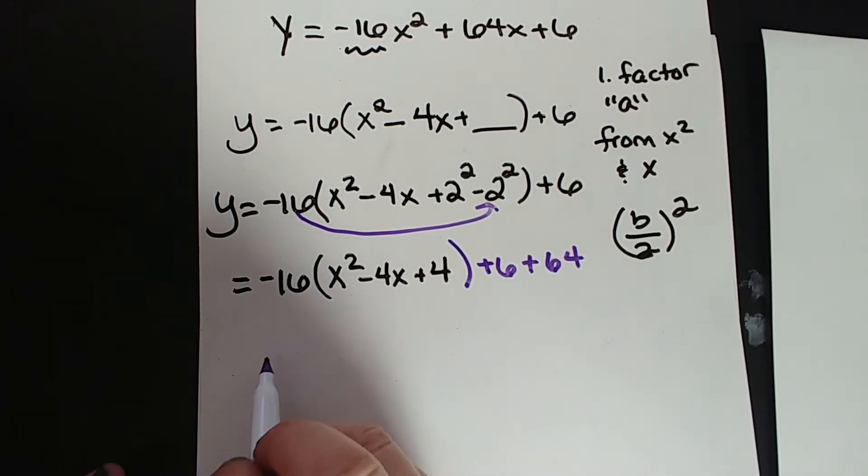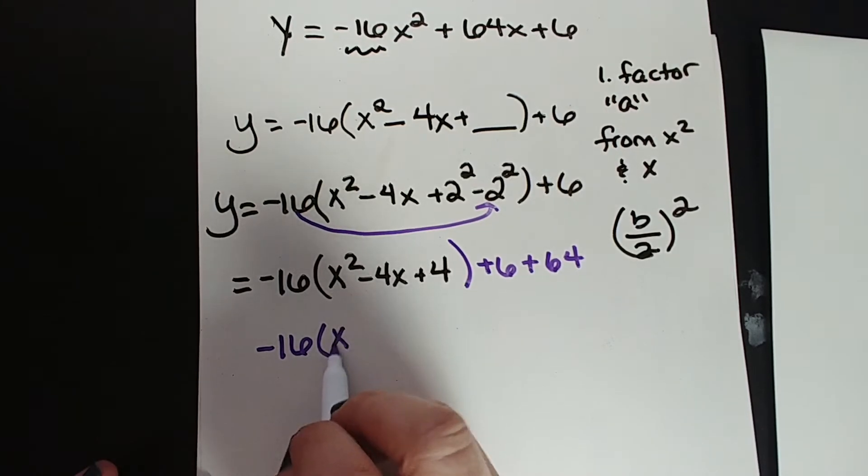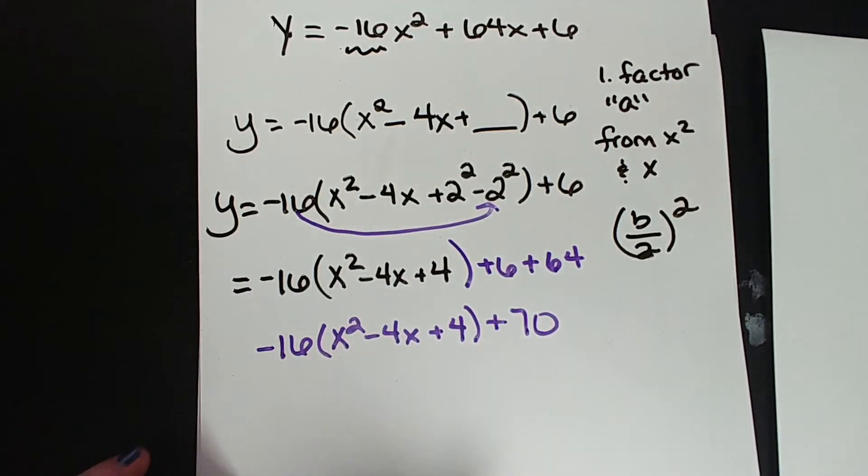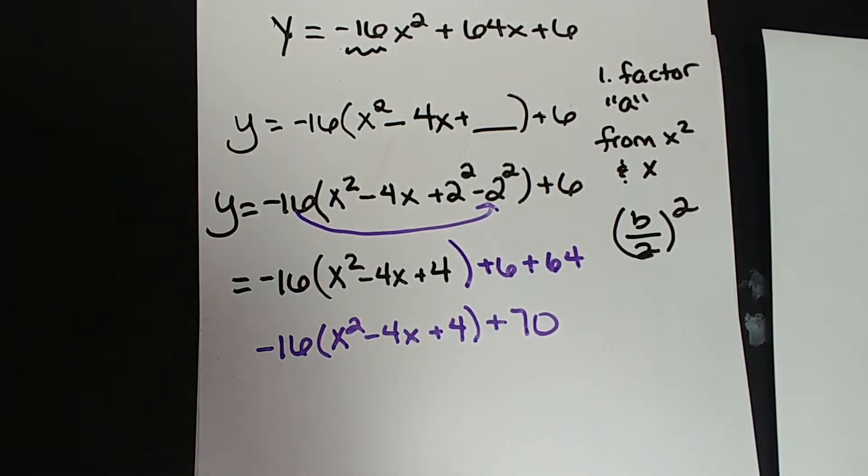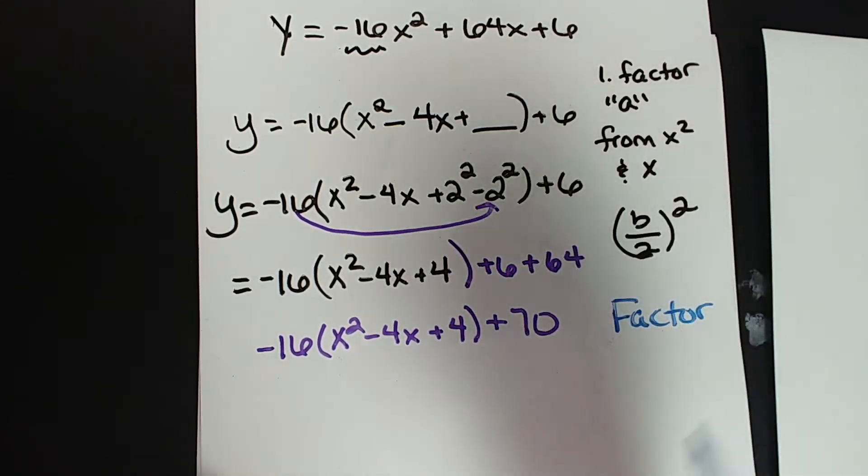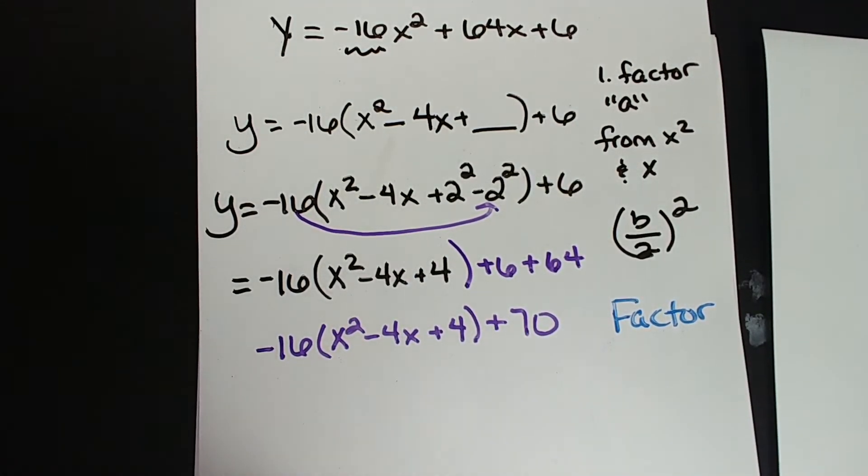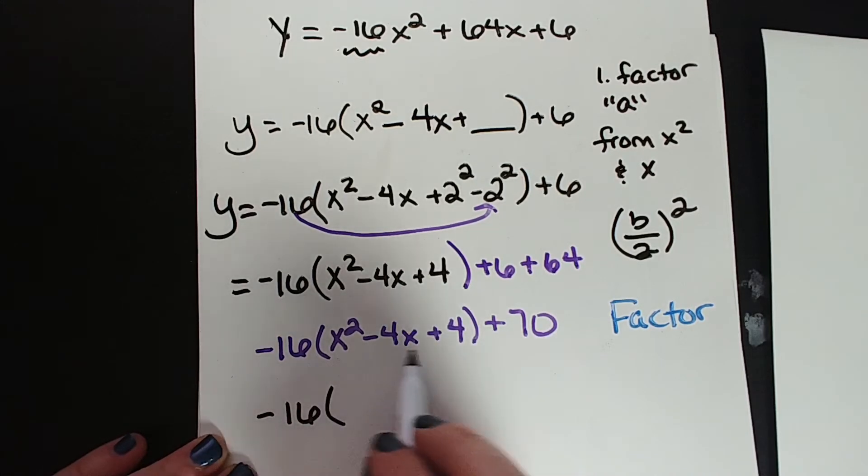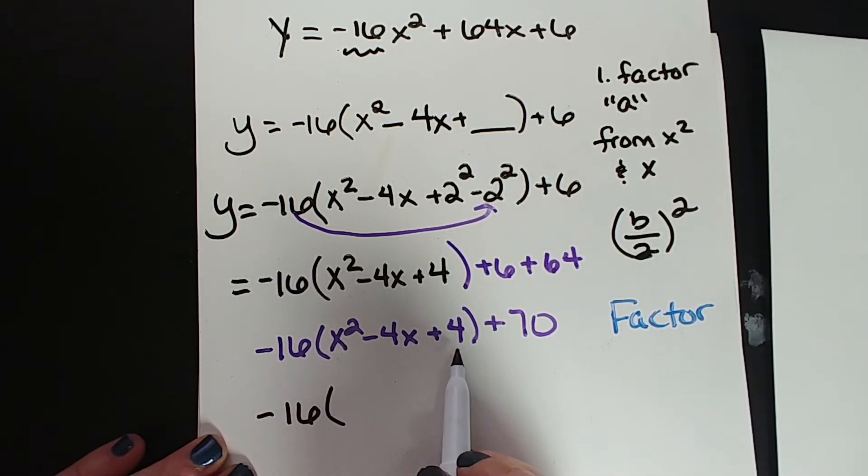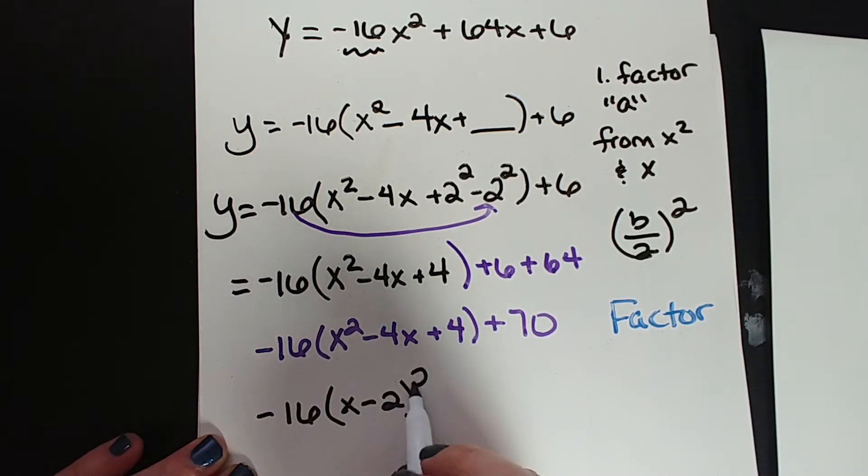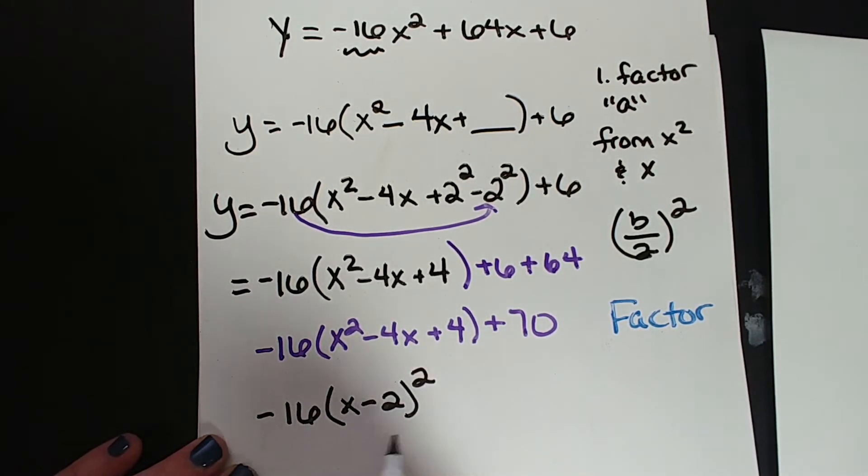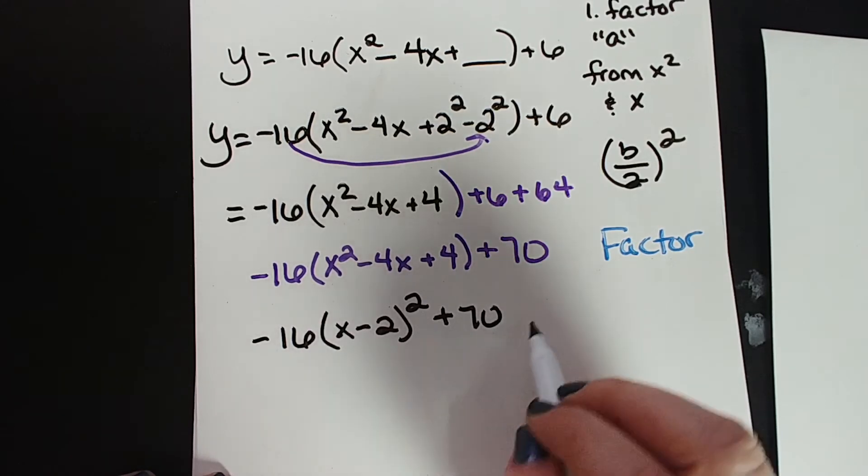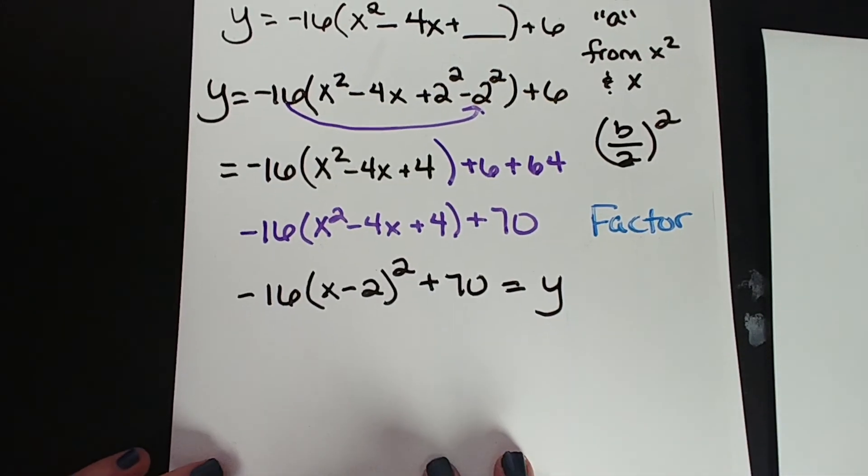So let's do a little bit more cleanup here. We have a negative 16, we have x squared minus 4x plus 4 plus 70. So now the next thing we want to do, we want to factor. So we're going to factor this so that it looks like that (x-h)² that we need so badly. So let's do that. Negative 16, when we factor this, it is now a perfect square trinomial. Factors of positive 4 that add up to negative 4, x minus 2 squared. x squared just breaks up into x and x, but we're writing it as the square of a binomial.